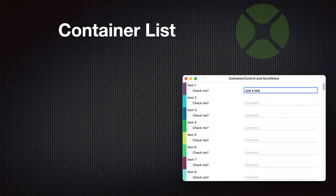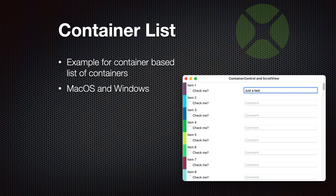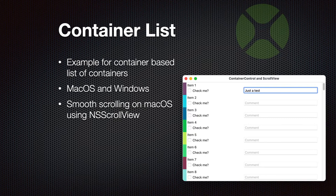A few people asked for a container-based list or grid control. We provide an example of a container-based list of containers which allows you to scroll through and create containers on demand as needed. We have a version running on macOS and Windows where we build a list based on containers. You can access all the containers, put in values, read values, and add new ones dynamically. It uses smooth scrolling on macOS by using an NSScrollView to host the list.